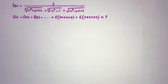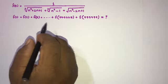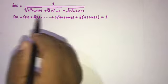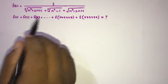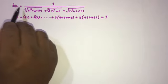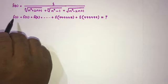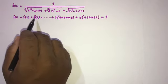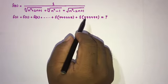Welcome to the Mathematics of My Channel. Today we are going to solve another interesting question. This is an American Mathematical Olympiad question: 1991, February paper 2, question 6. The question gives a function f(n) and asks us to determine the value of f(1) + f(3) + f(5) + ... up to the last term.